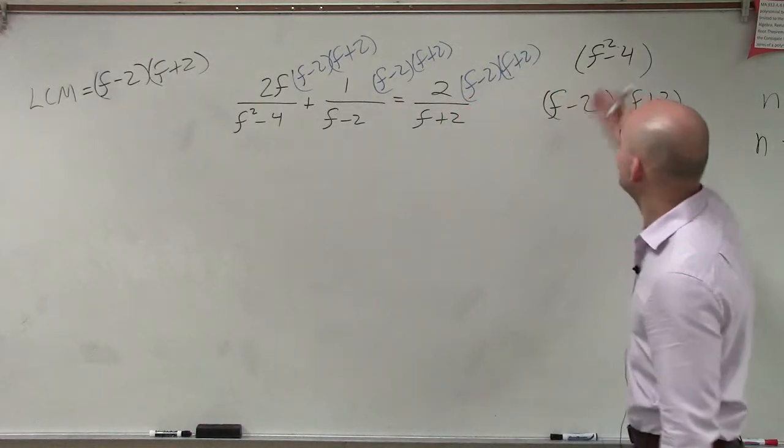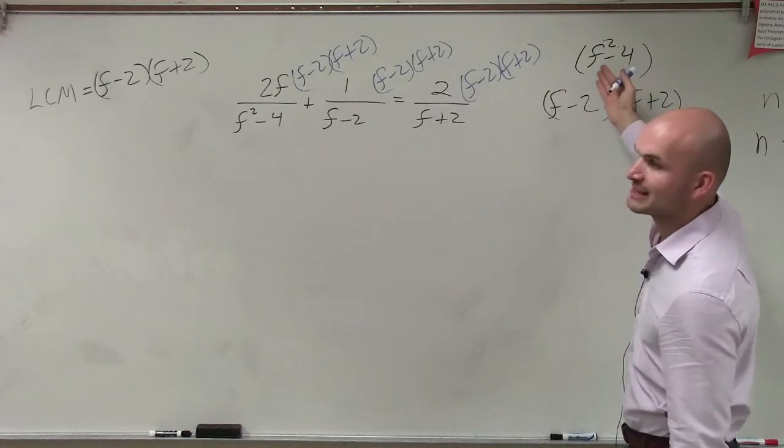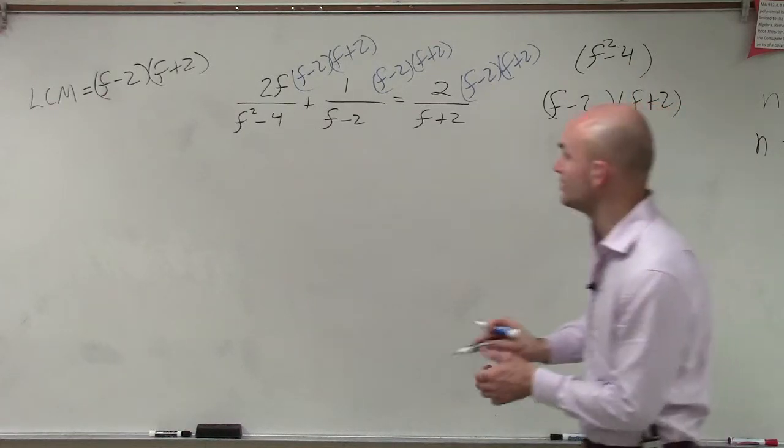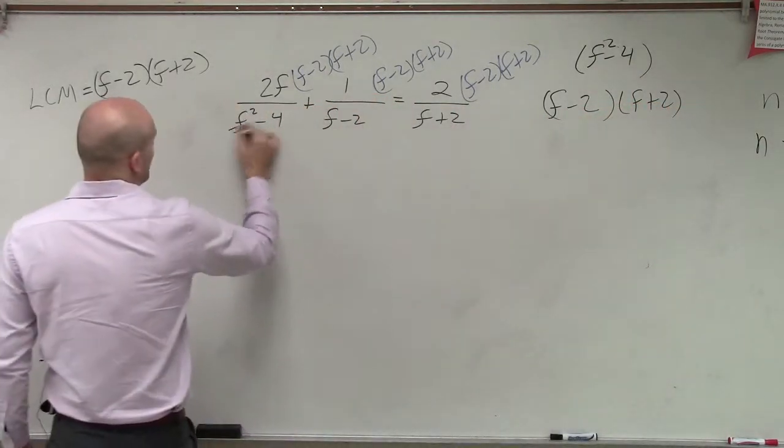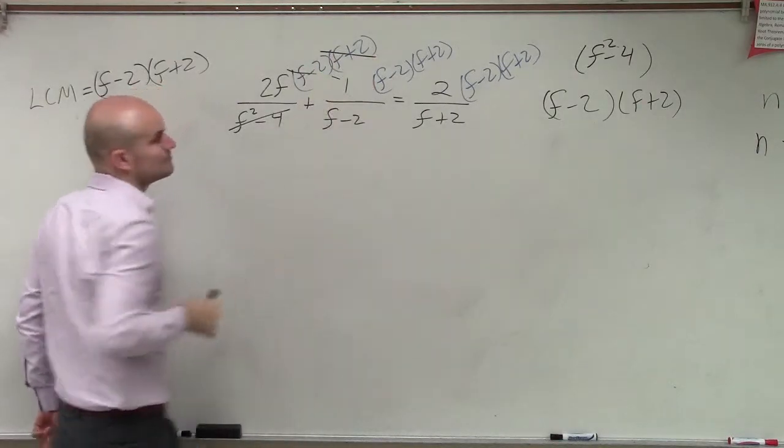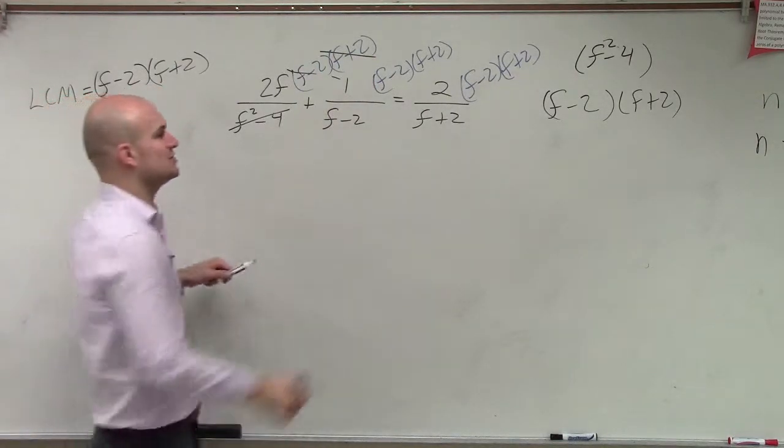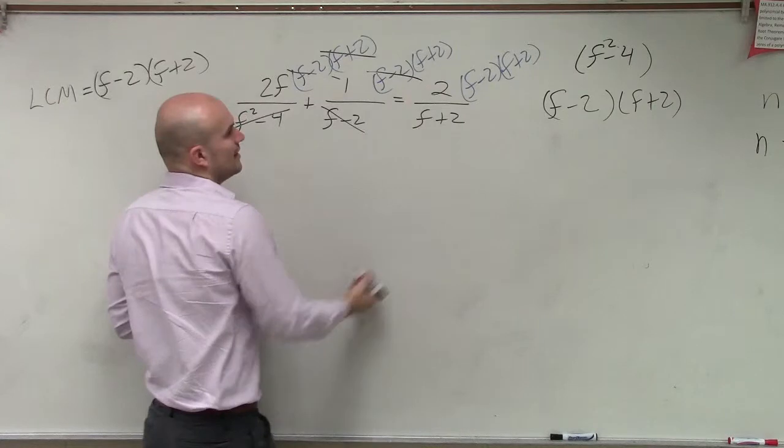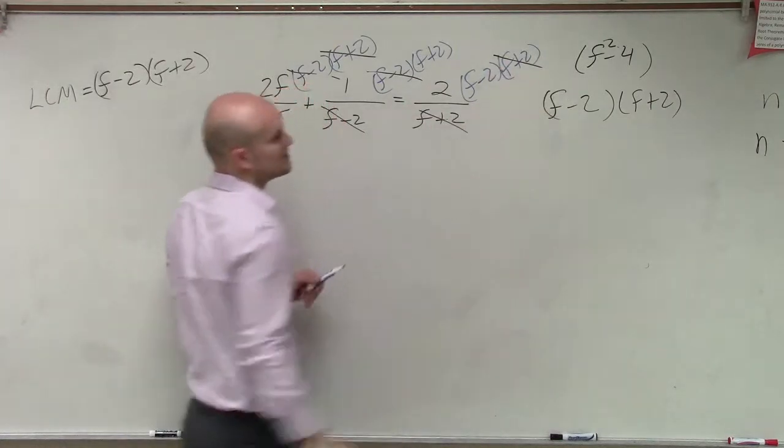Now, we notice that f minus 2 times f plus 2 is the same thing as f squared minus 4, right? So these are all going to divide to 1. Now here, my f minus 2's divide to 1. Here, my f plus 2's divide to 1.